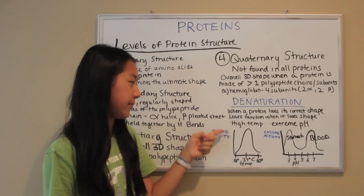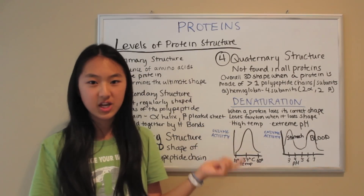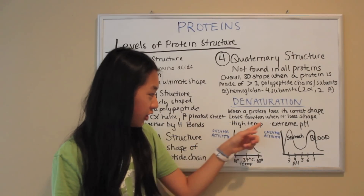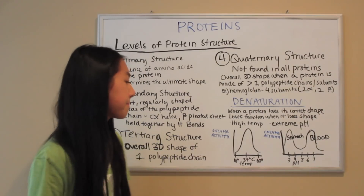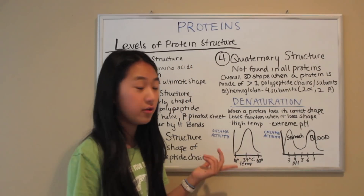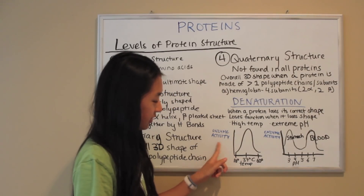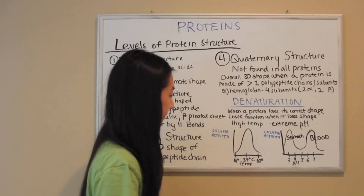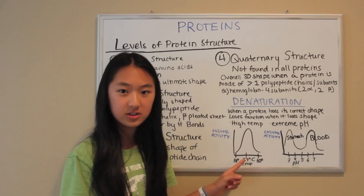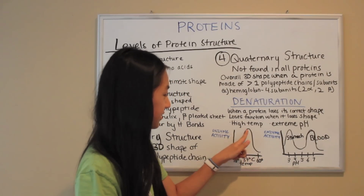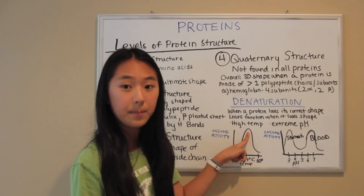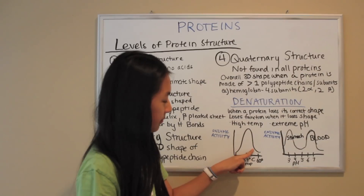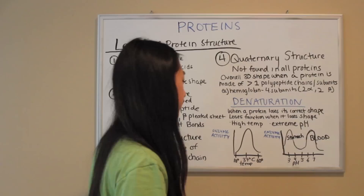Denaturation is when a protein loses its correct shape, and the protein also loses its function because shape determines function for proteins. Things that can denature proteins are high temperature and extreme pH, among others. These charts show the denaturation of proteins. On one axis is enzyme activity and on the other is temperature. This chart shows enzyme activity for enzymes in the human body — the average human body temperature is 37 degrees Celsius, so enzyme activity is highest at 37 degrees. As temperature starts to increase, enzyme activity goes down because the enzymes start to denature and lose their shape.